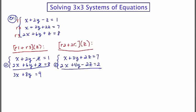And now I'm going to add. And when I do that, I get 3X plus 7Y, the Zs cancel out, and that equals 9.